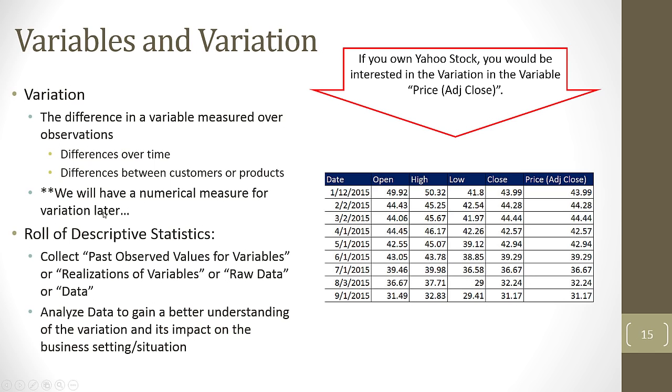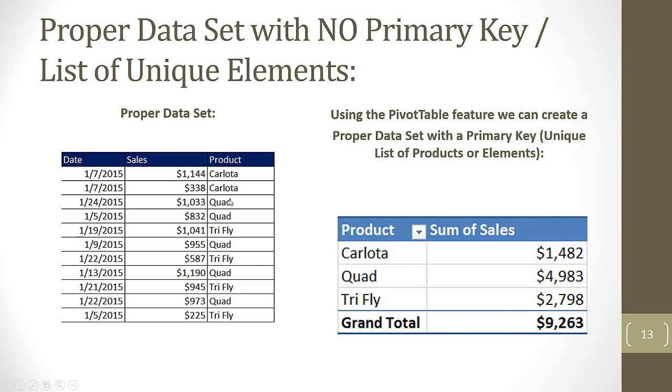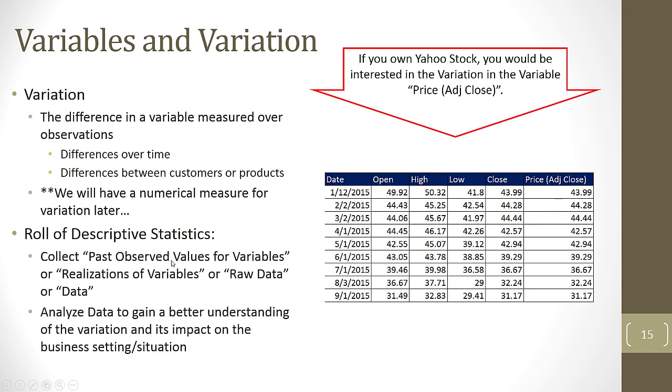We can also have variation like differences between customers or products. If I go back to slides, let's see, slide number 13, we might be interested in the quad boomerang. And for each one of these records there's a different number here. So we might be interested in the variation amongst our different products. Go back to slide number 15. The role of descriptive statistics is often going to be to collect past observed values for variables. Here's a variable or a field, and we're collecting past data. And then we're going to analyze that data to gain a better understanding of the variation and its impact on a business setting or situation.